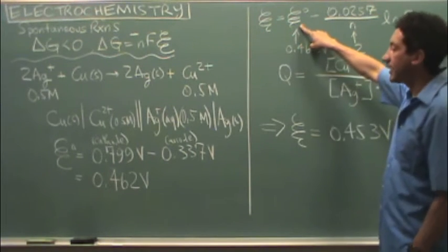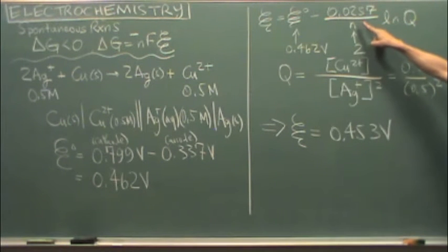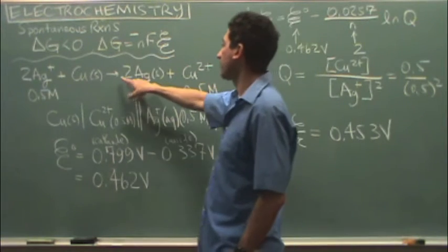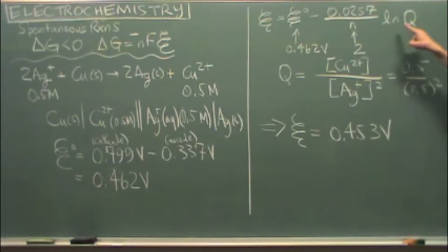The potential equals the standard potential, that's this one, minus 0.0257 over N. N is the number of electrons that will cancel out in this equation, which will end up being two if you balance the redox. And the natural log of Q.